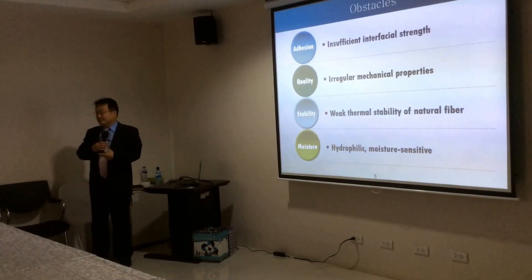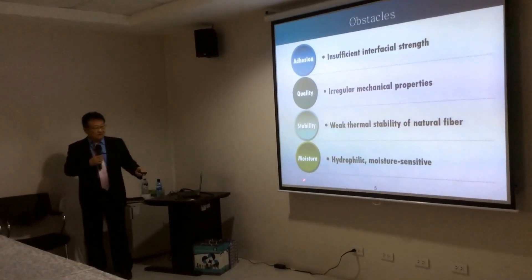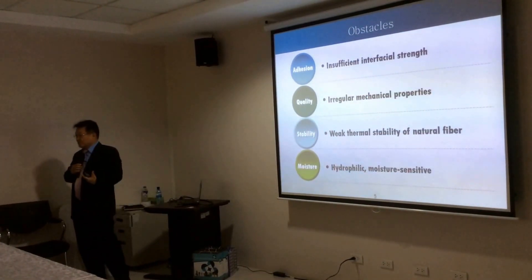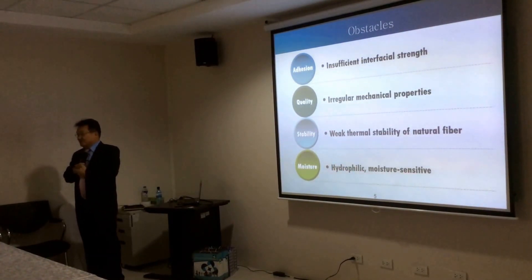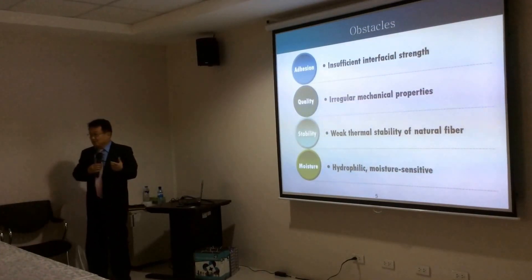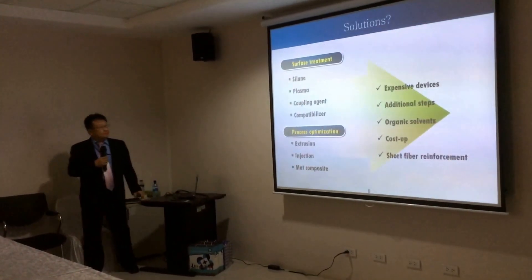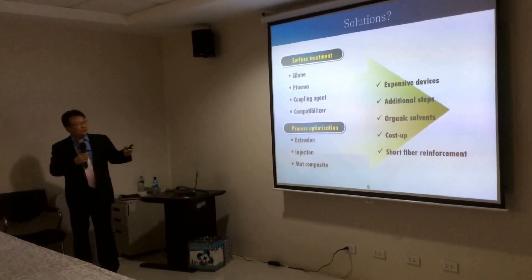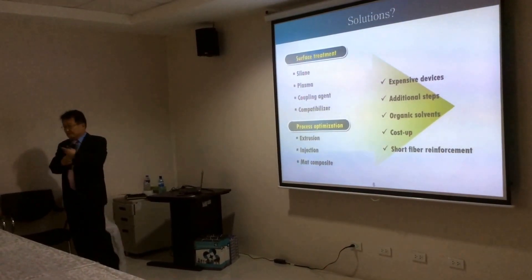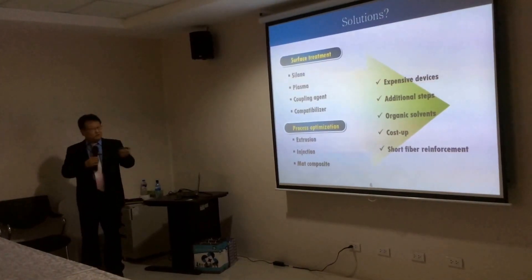The third problem is thermal stability — natural fibers burn very easily, so it is best to use a fire-retardant matrix system so they don't burn as easily. The fourth is a moisture problem: they are very hydrophilic and absorb moisture quite readily, so we treat the fibers to reduce absorption, which Marisa already discussed.